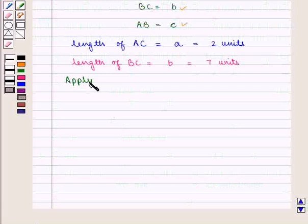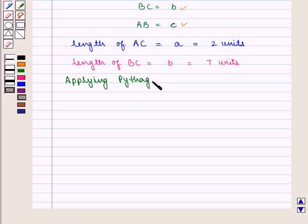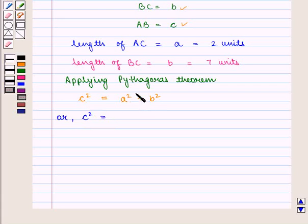Therefore, applying Pythagoras theorem, we get c² = a² + b². Here, c is the hypotenuse and a and b are the two legs of the triangle. Therefore we get c² = 2² + 7².